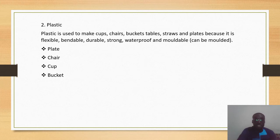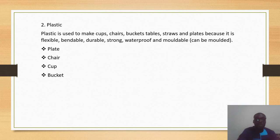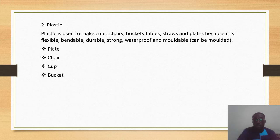Plastic is used to make cups, chairs, buckets, straws, tables, and plates. Plastic is used for these items because it is flexible, bendable, durable, strong, waterproof, and can be molded into different shapes. So we have things like plates, chairs, cups, buckets, and plastic tables made from plastic.